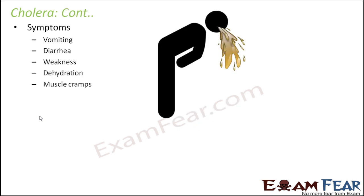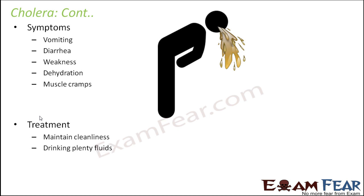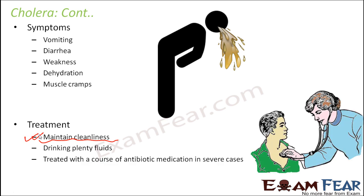In cholera, the patient tends to vomit, have diarrhea, weakness, and dehydration. The body gets completely dehydrated because you are vomiting and losing water, and passing stools many times. The water content of the body reduces significantly. If cholera becomes very severe, the body can become so dehydrated that the patient can even die — cholera can be that deadly. To treat it, at the initial stage the patient should drink plenty of fluids to avoid dehydration, and cleanliness is a must. If it has already become severe, antibiotic medication is necessary.